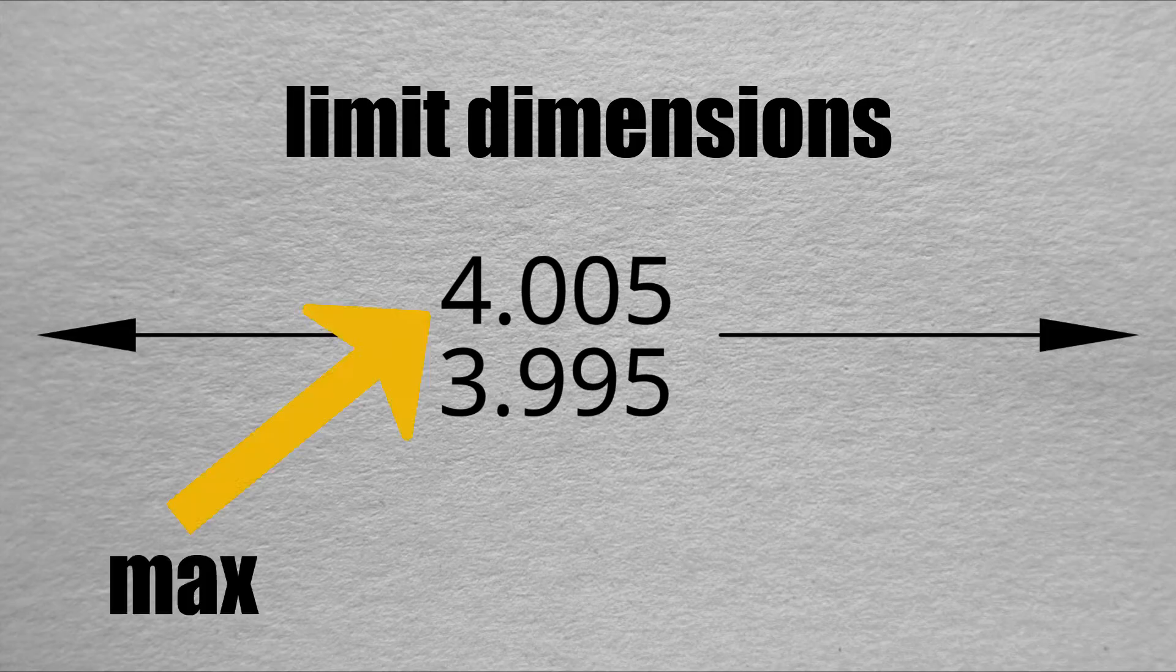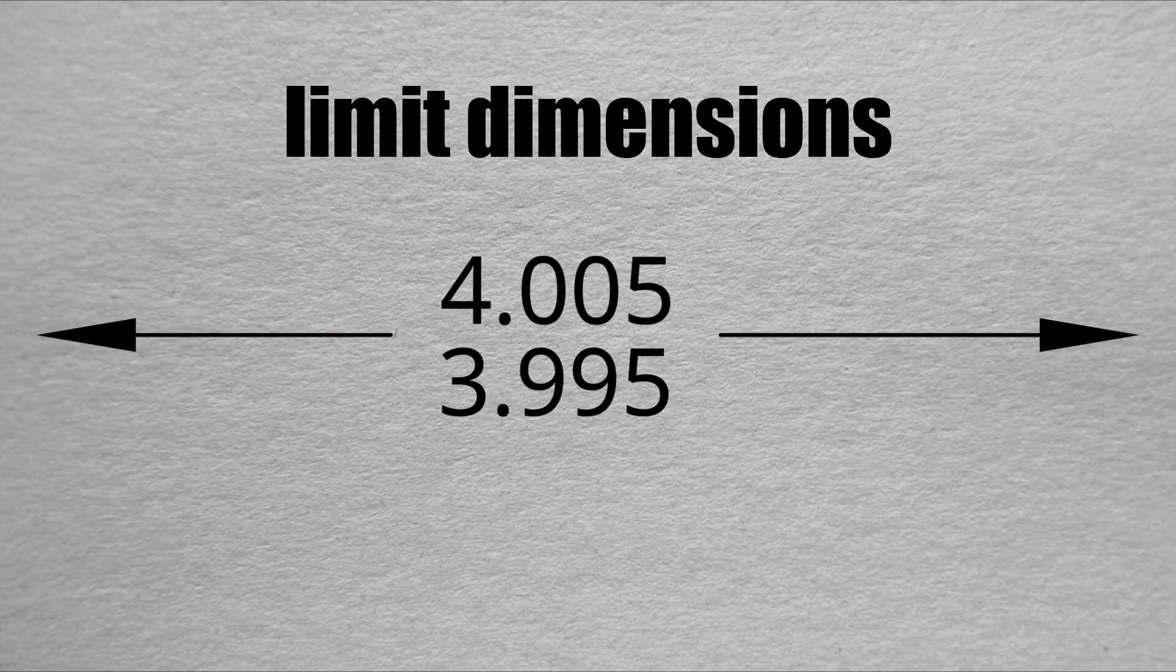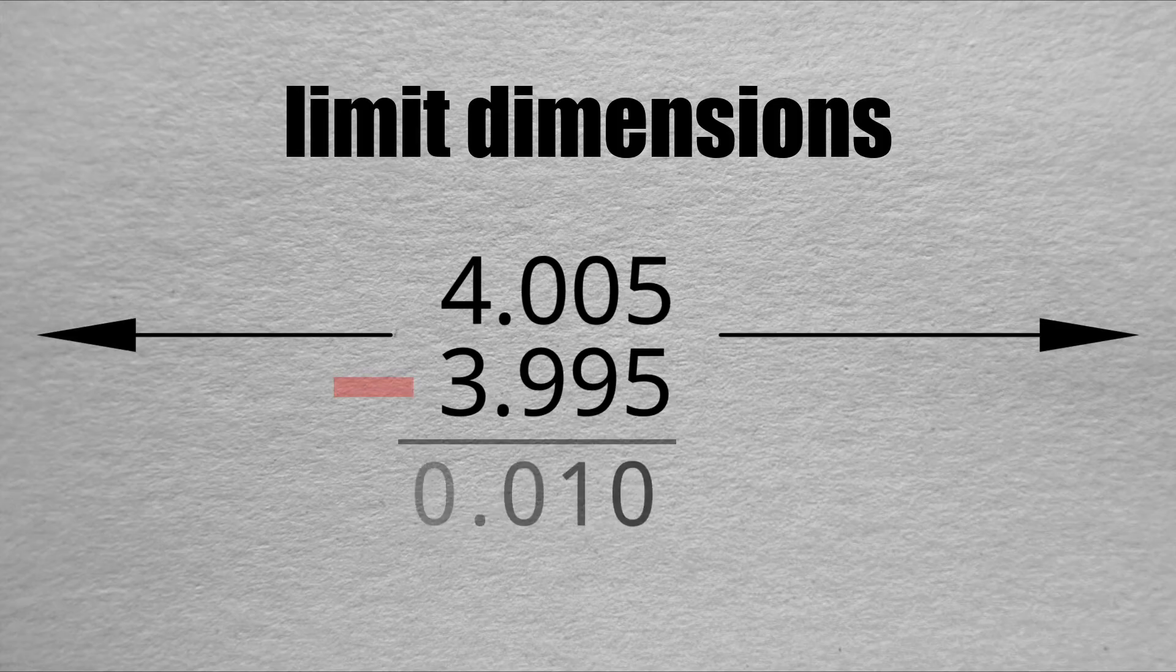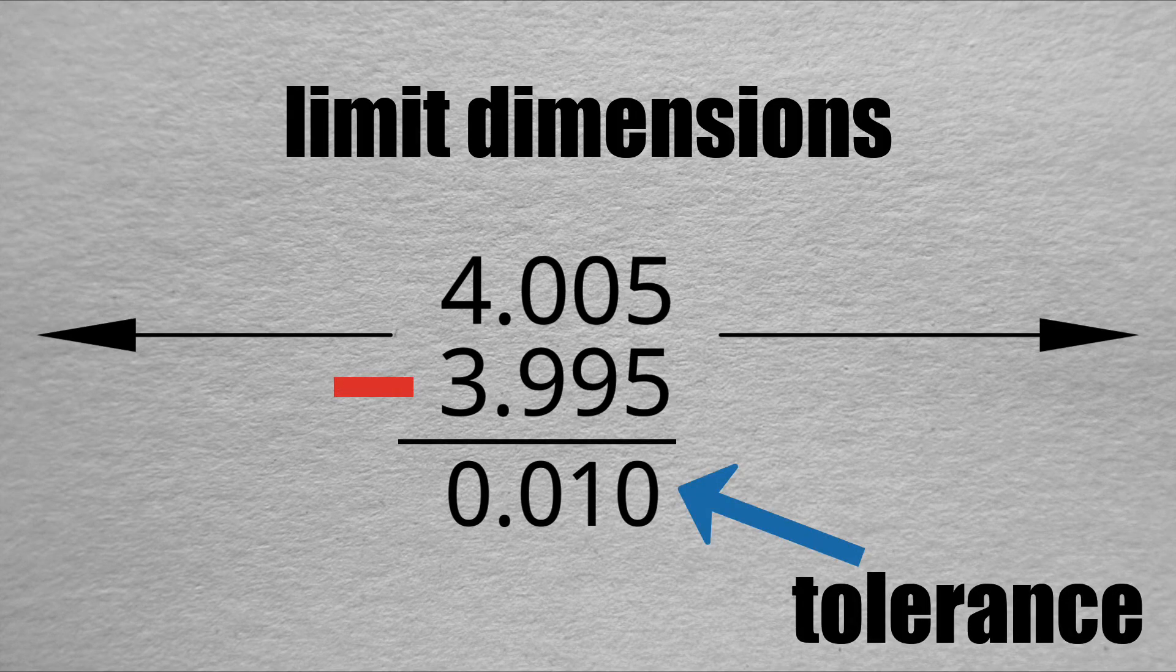A limit dimension tells you the maximum and minimum sizes something can fall within and still be in the design guidelines. Unlike other tolerances, the value of the max and min is given. To find a tolerance for the limit dimensions, simply subtract the larger number from the smaller number as shown here.